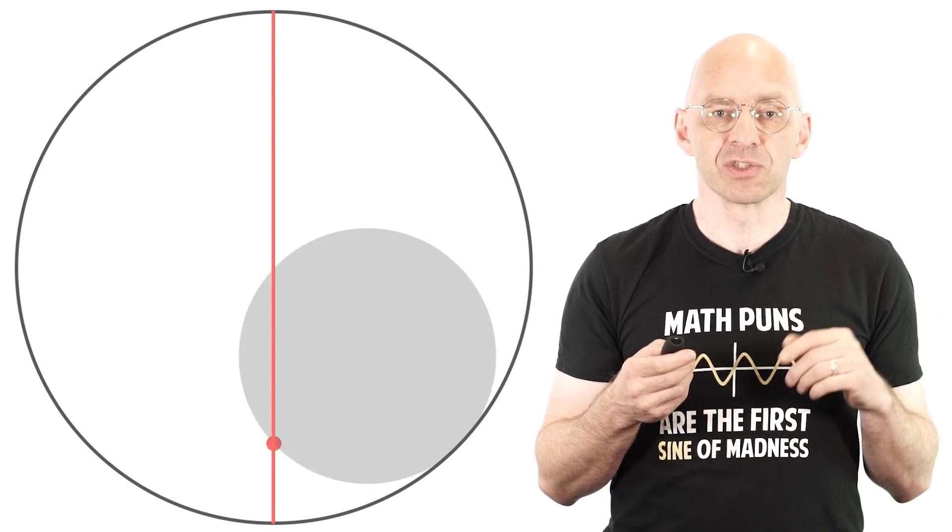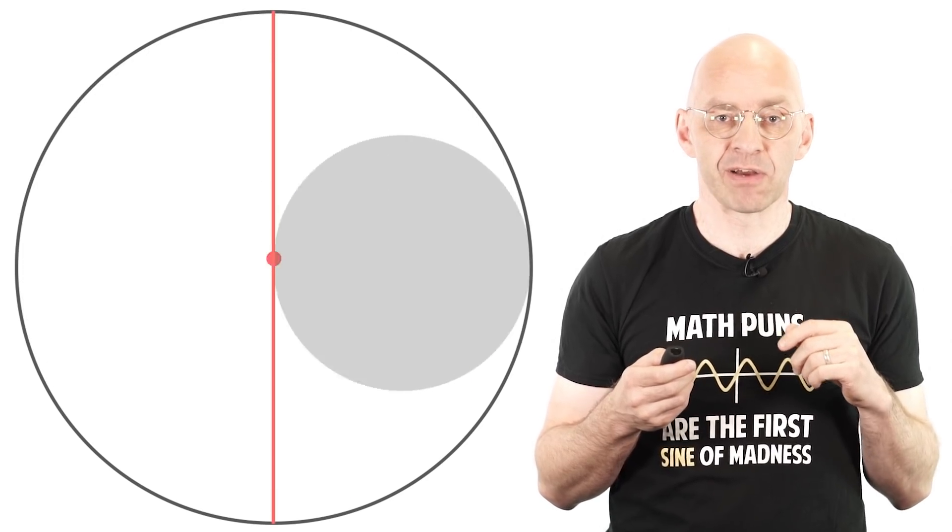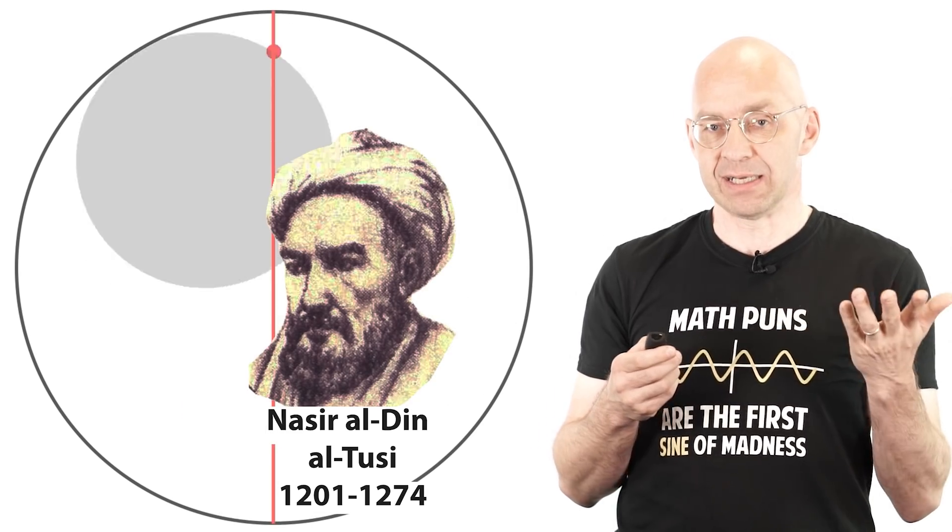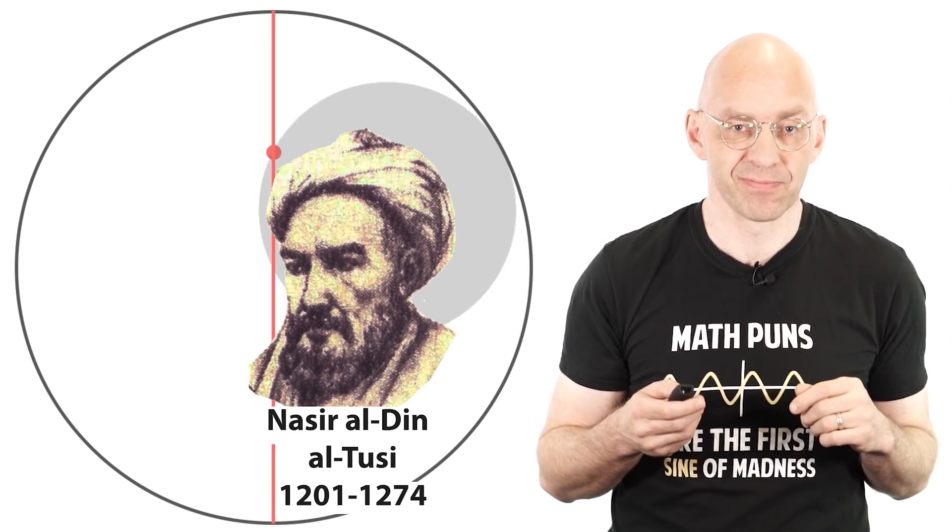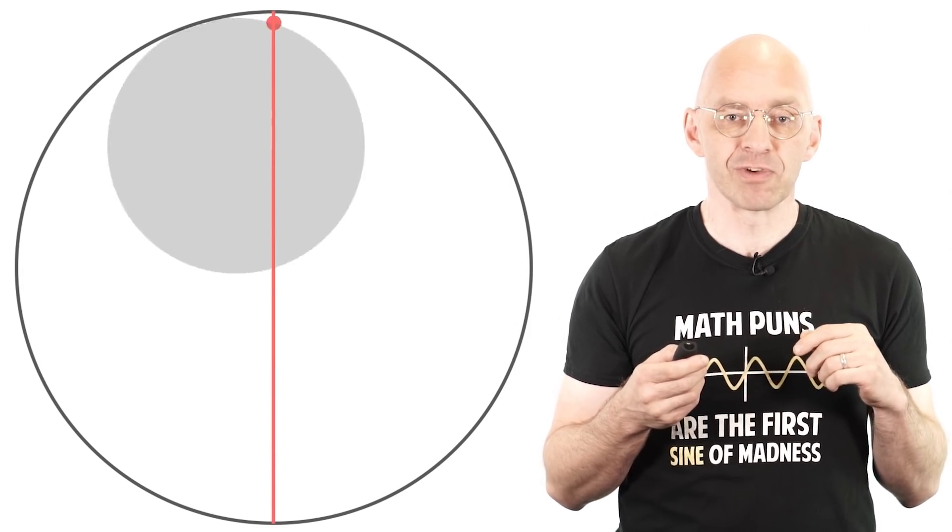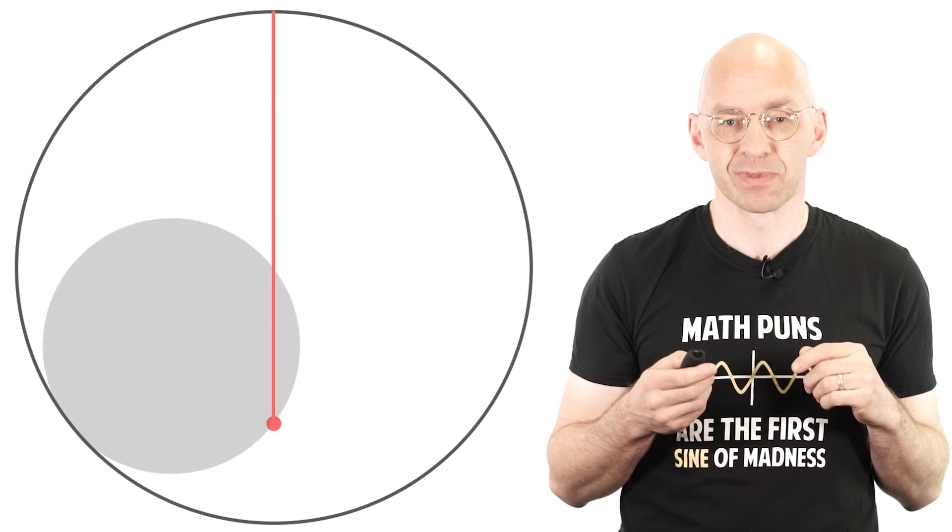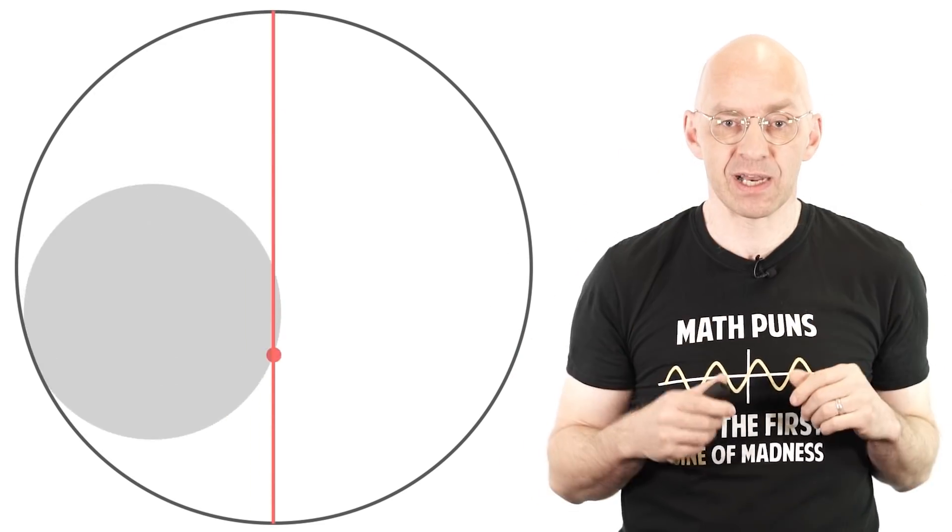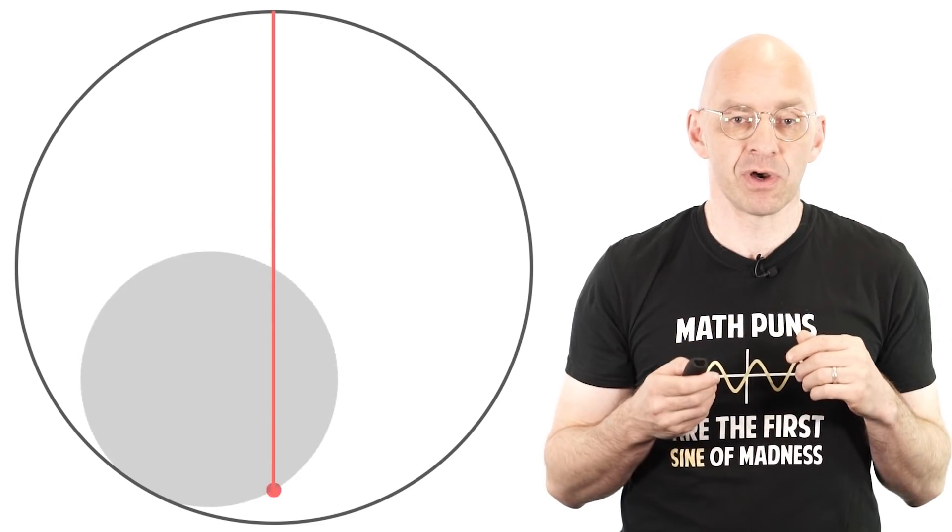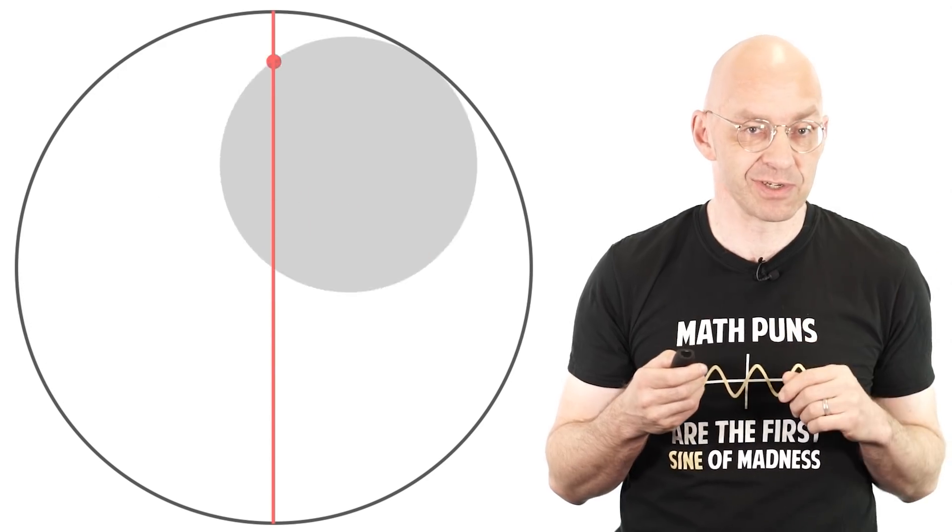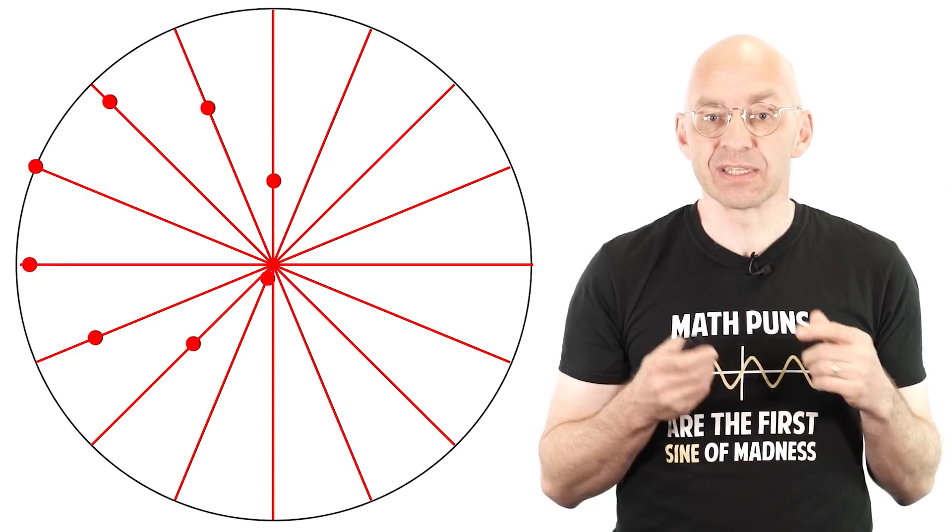This phenomenon is known as the Tusi couple named after its discoverer, the 13th century mathematician and astronomer Nasir al-Din al-Tusi. Regular Mathologers will remember the Tusi couple from our recent video on epicycles and Fourier series. If a circle rolls inside a circle of twice the size then any point on the circumference of the small circle traces out a diameter of the larger circle. Super duper pretty.